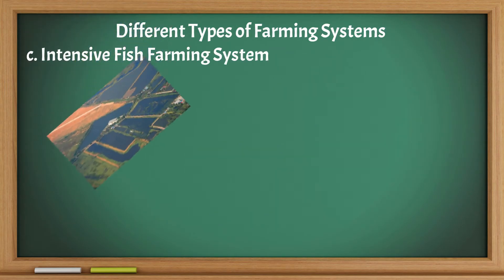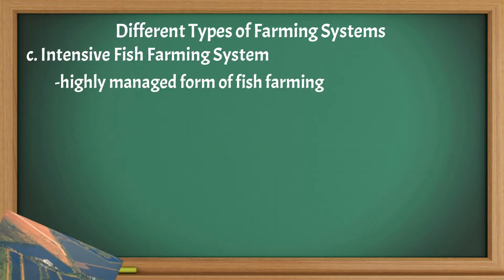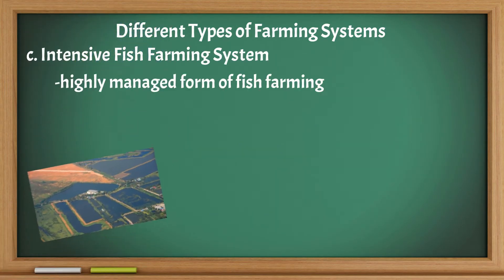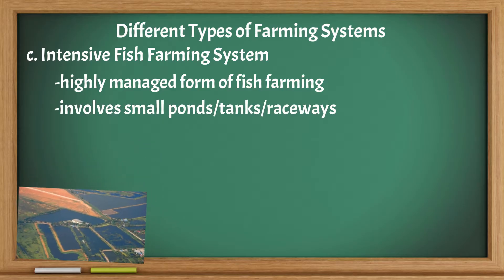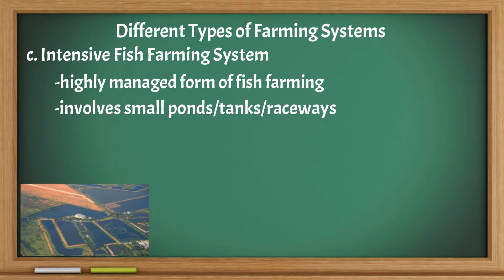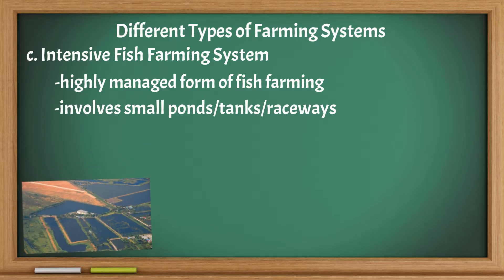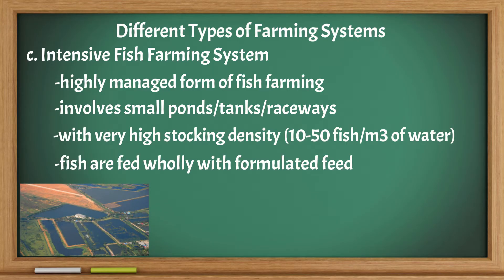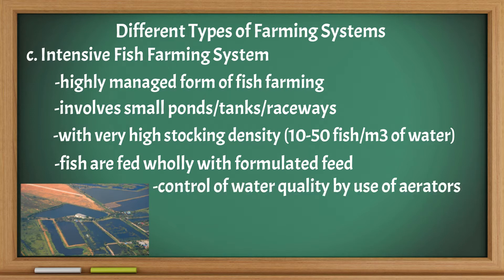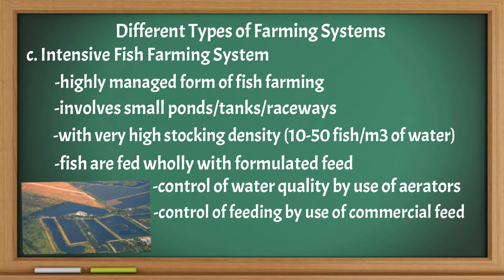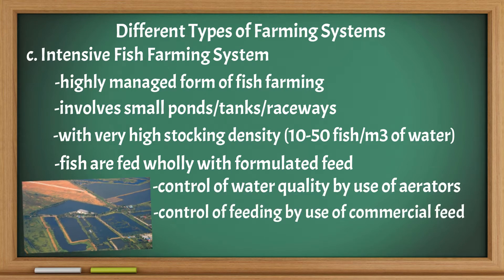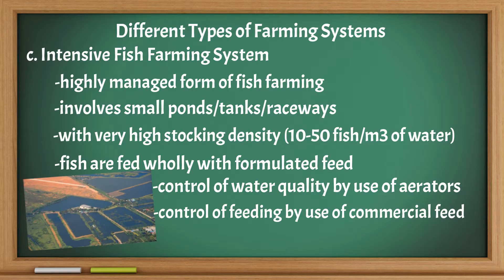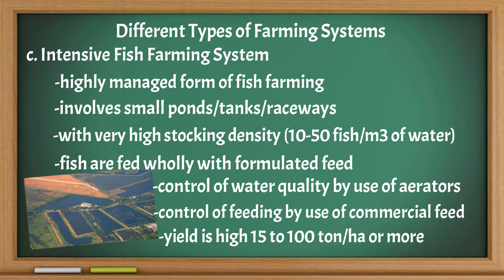Intensive Fish Farming System: A highly managed form of fish farming. It involves small ponds, tanks, and raceways with very high stocking density. Fish are fed wholly with formulated feed. Control of water quality is achieved by use of aerators, and feeding is controlled by use of commercial feed. The yield is high.